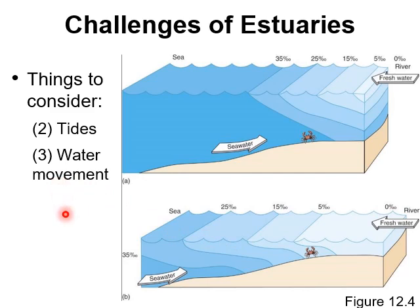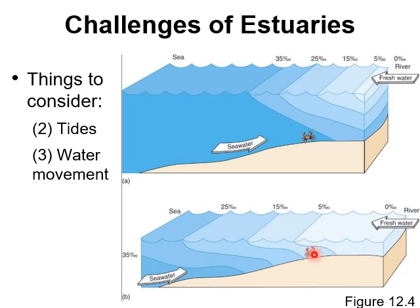Tides also affect estuaries because water goes in from the ocean and then comes back out. During high tide, a crab on the sea floor might be experiencing fully saline water at 35 parts per thousand. But when the salt water retreats at low tide, that same crab could now be in 15 parts per thousand water. So in just six hours, the crab has gone from 35 to 15 parts per thousand — a very big swing in salinity.